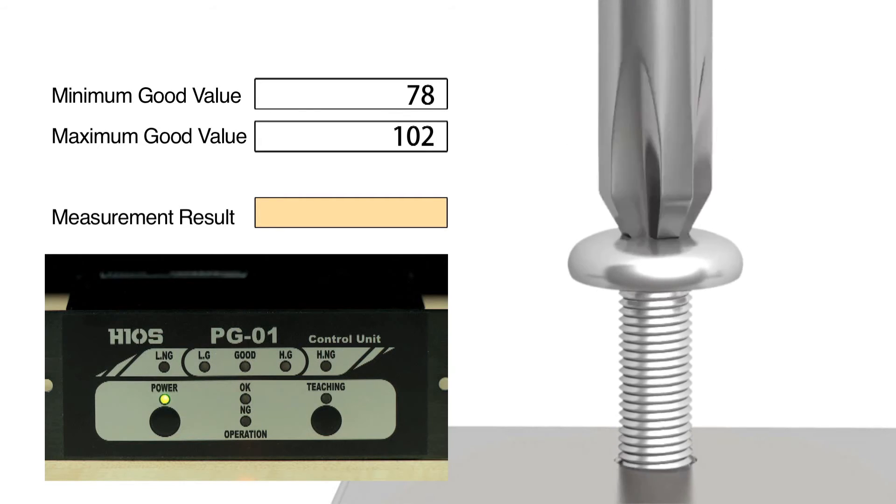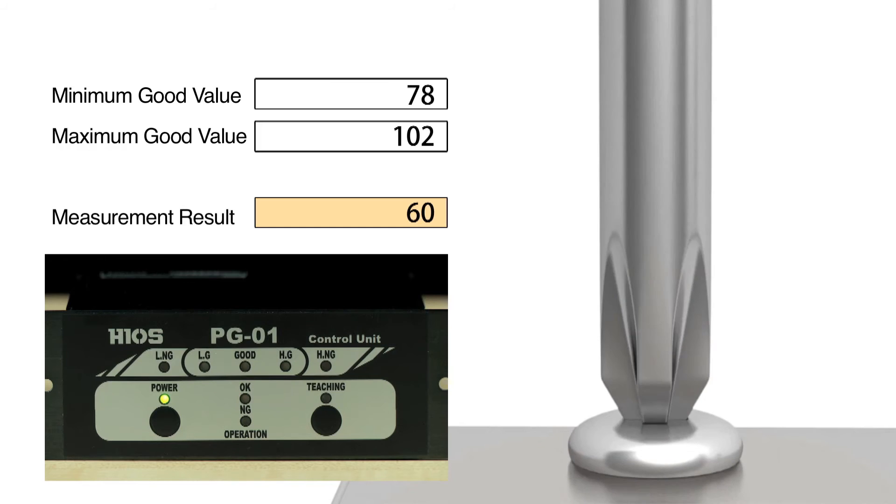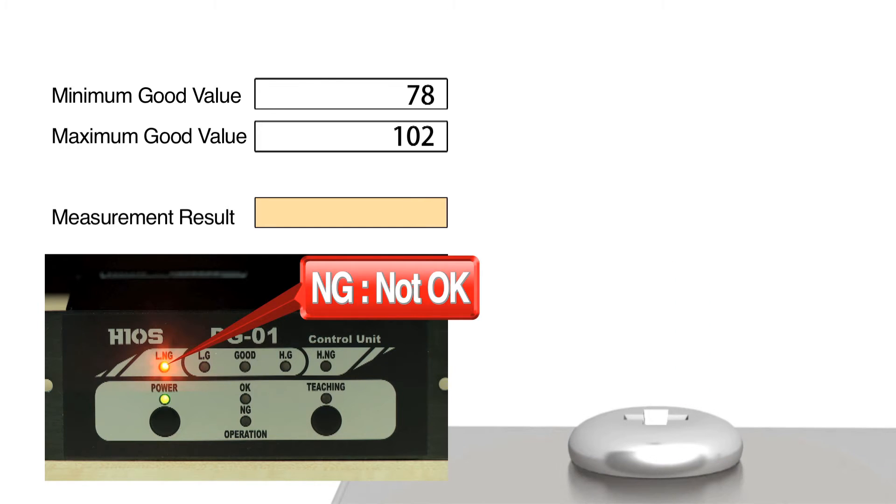Errors such as crossly tightened, insufficient torque, or loosening are detected in real time and the judgment result is notified to the operator or manager through LED lights or beeps.